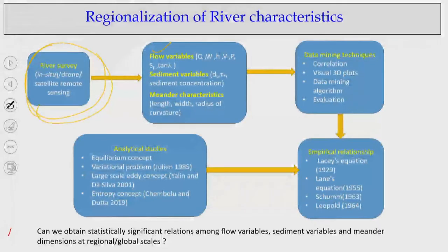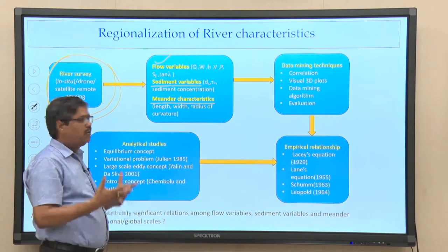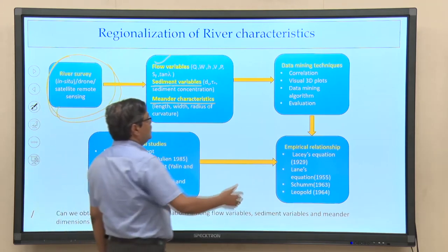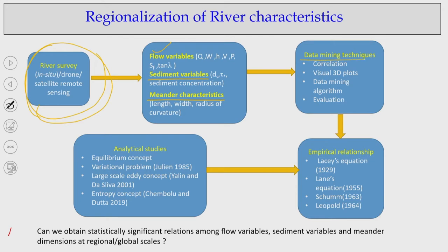We target flow variables, sediment variables, and meandering characteristics. Once you get all these variable data — flow, sediment, and meandering — you then try to establish relationships between them. That is why we use data mining tools: older concepts like correlation techniques, and now 3D visualization techniques along with many algorithms developed over the last two decades for data mining from large datasets.